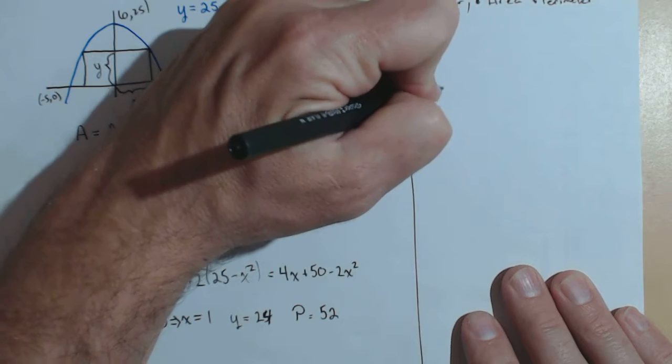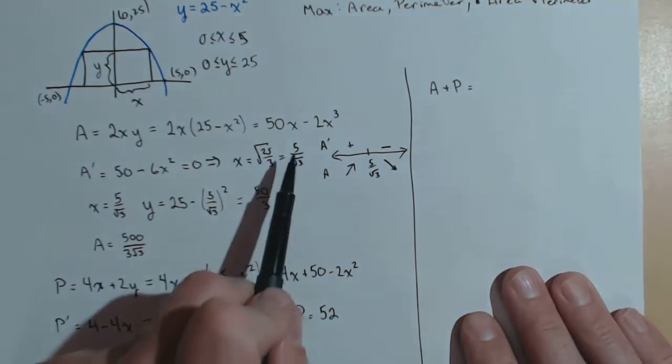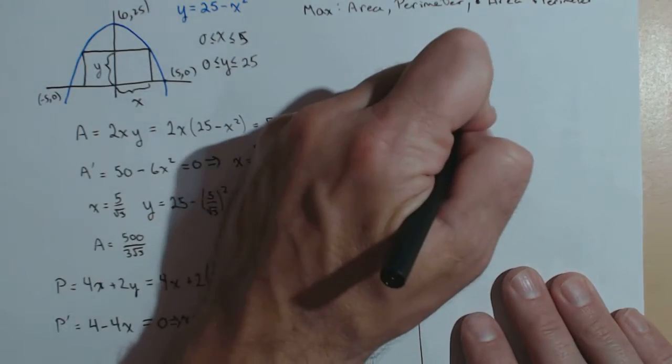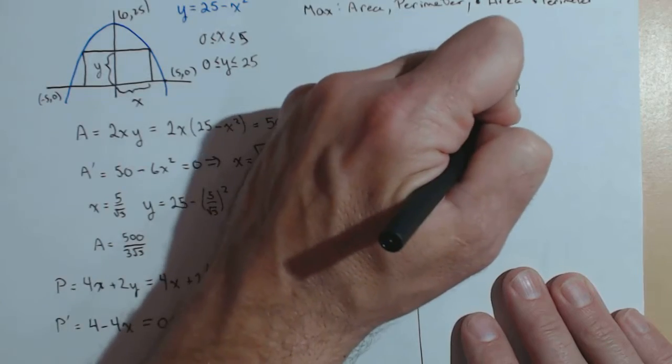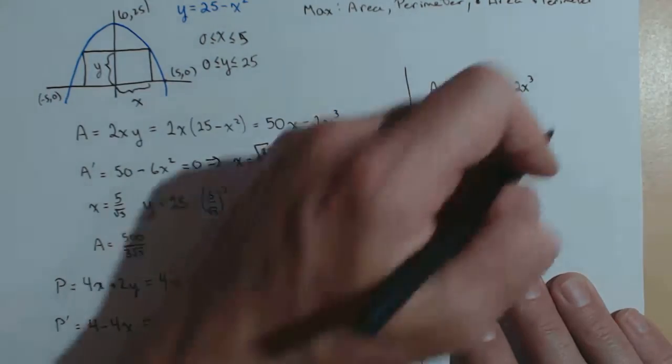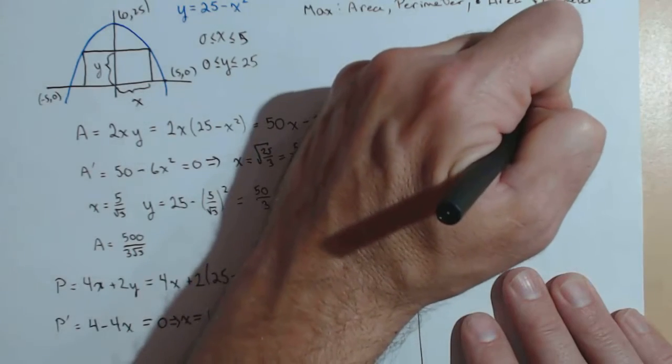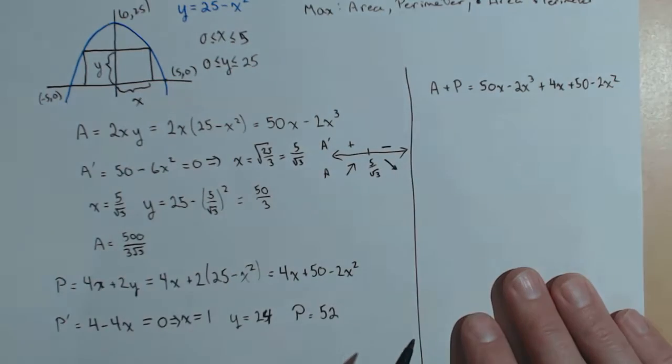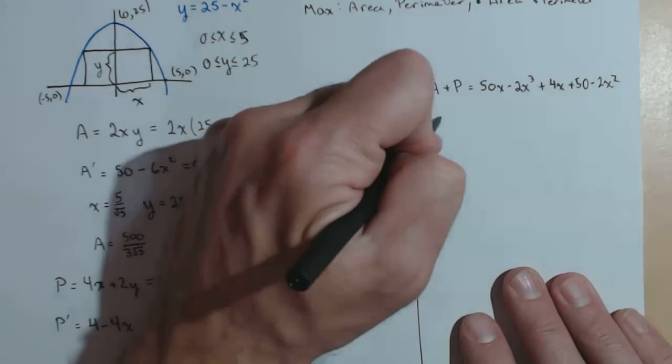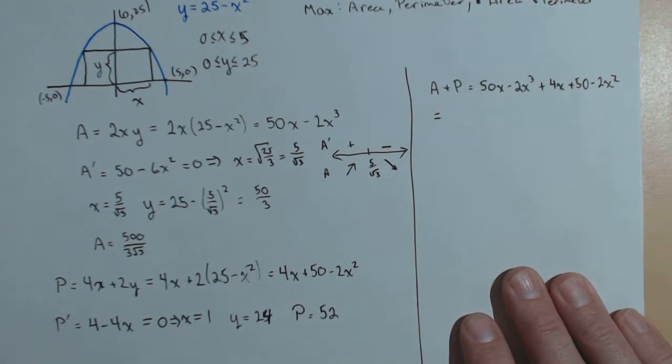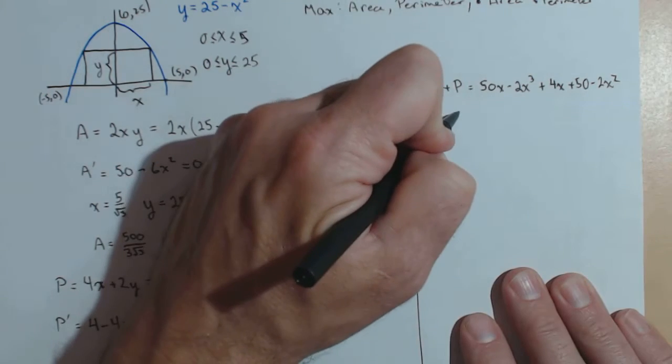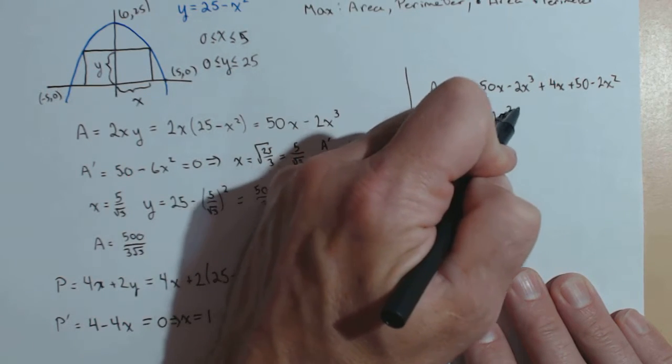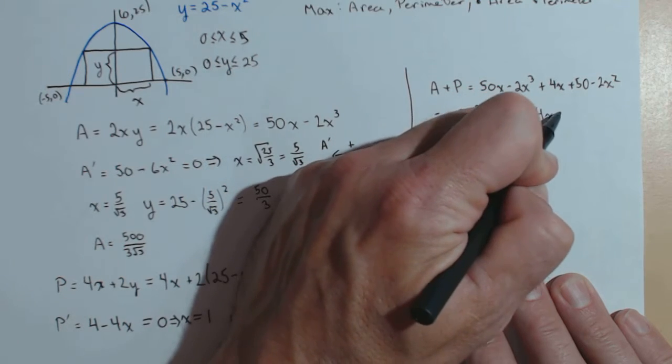Lastly, they wanted us to maximize the area plus the perimeter. Well, we already found the functions in terms of x, so let's just add those together. For area, it was 50x minus 2x cubed. And then for perimeter, plus 4x plus 50 minus 2x squared. So this answer might not work out as nice as the other two did. So we're going to combine like terms, simplify as much as we can. There's not a whole lot we can do. It's minus 2x cubed minus 2x squared plus 54x plus 50.